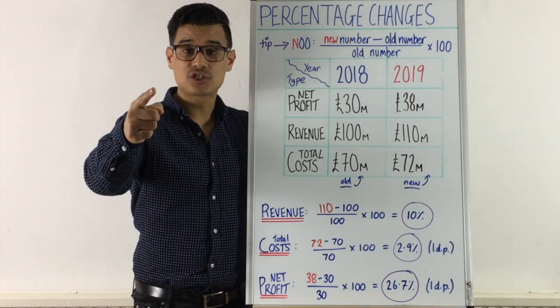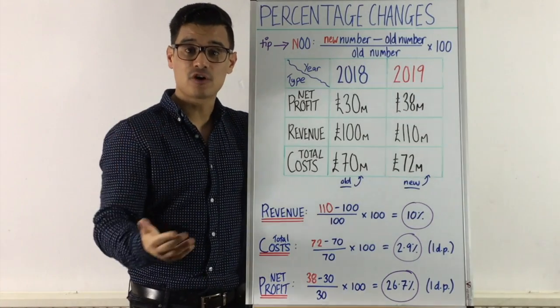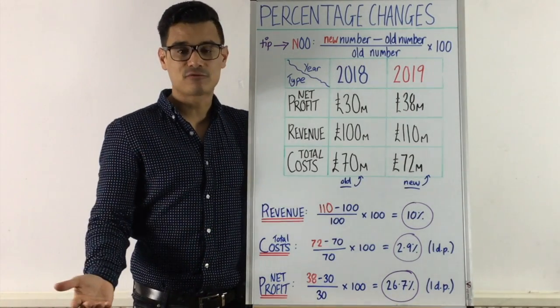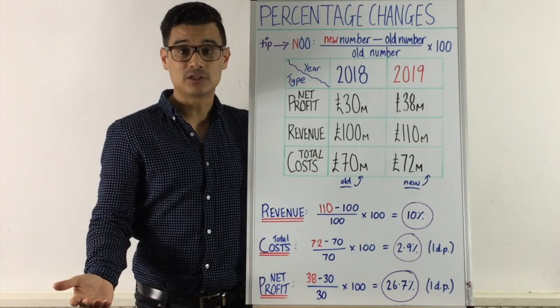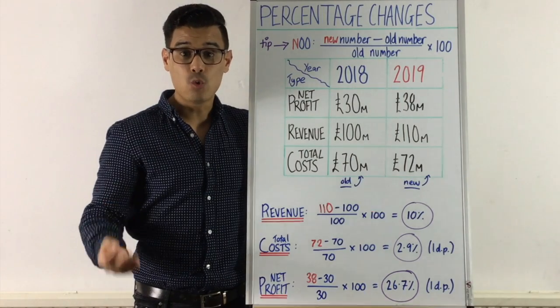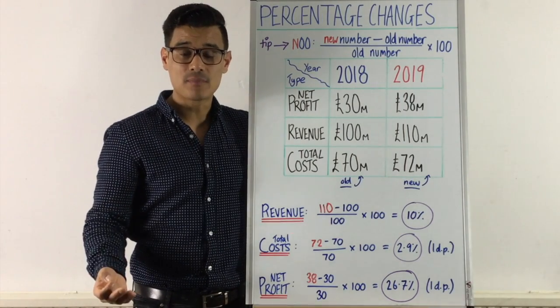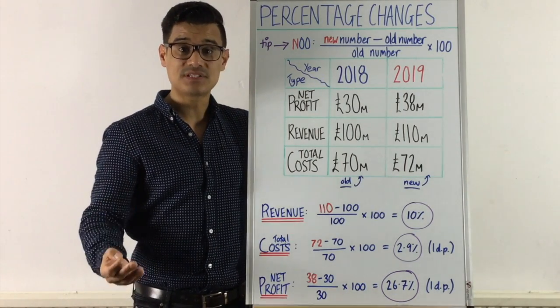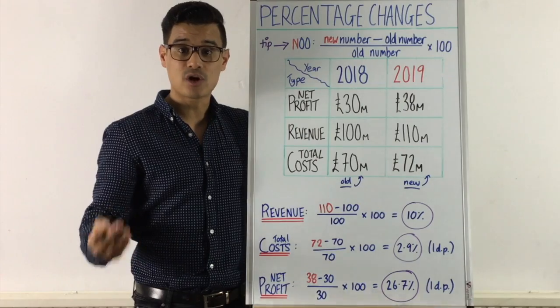If you can't do percentage changes, you are throwing away two marks, maybe three marks if it's a bigger question. It's always going to come up because it fits the bill for the 10% numerical questions.